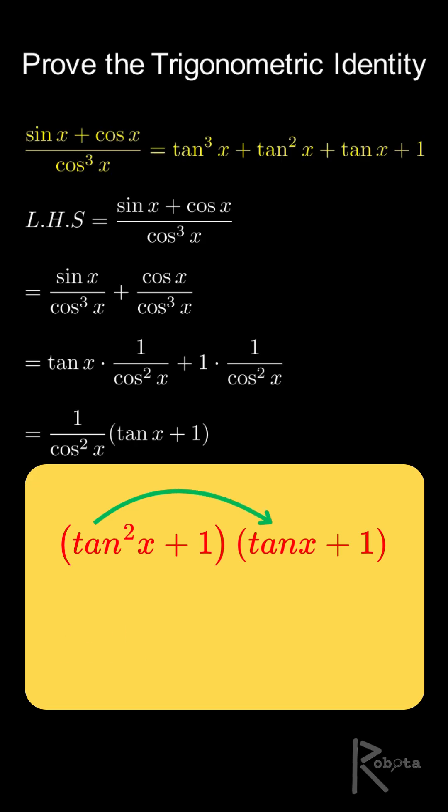Tan squared x times tan x becomes tan cubed x. Tan squared x times 1 is tan squared x. 1 times tan x is tan x. And 1 times 1 is 1.